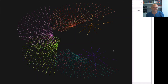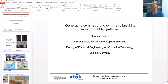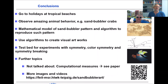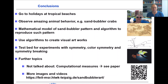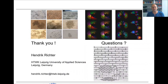So my conclusions are: I go on holidays to tropical beaches and observe amazing animal behavior — for instance, the behavior of the sand bubbler crabs. In a simple mathematical model such animal behavior can be captured, and algorithms to reproduce such patterns can be designed. Such algorithms can be used to create visual artworks, and I have used this as a test bed for experimenting with color symmetry and symmetry breaking. There are further topics covered in the paper, and there are also more images and videos on the associated page. Thank you for your attention — I'm open to questions, while knowing that answering one question may open up many more.